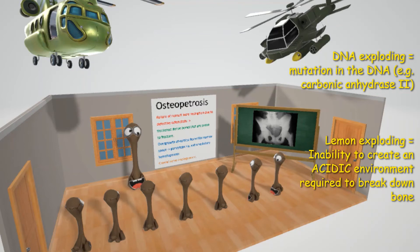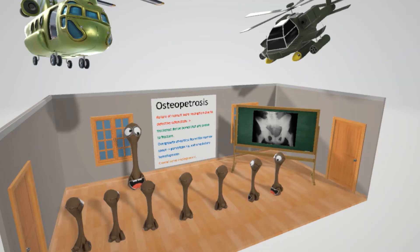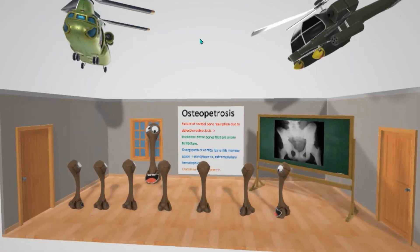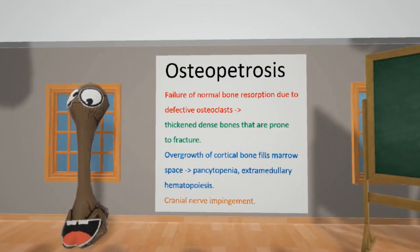That is the pathophysiology of osteopetrosis. Now let's talk about the symptoms. This osteoclast is learning about osteopetrosis, and as the teacher mentioned, osteopetrosis is failure of normal bone resorption due to defective osteoclasts, which leads to thick and dense bones that are prone to fracture.